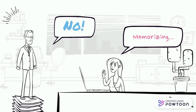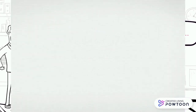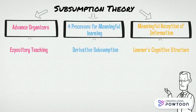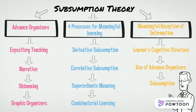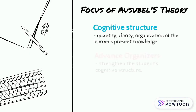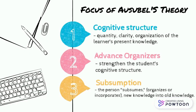Students need to manipulate ideas actively. This graphic organizer will show the flow of Ausubel's verbal learning theory, or subsumption theory. Ausubel's theory focuses on the following. First, cognitive structure, which is the most important factor influencing learning, is the quantity, clarity, and organization of the learner's present knowledge. Secondly, advanced organizers, which strengthen the student's cognitive structure by allowing students to have a bird's eye view to see the big picture of the topic before going to the details.